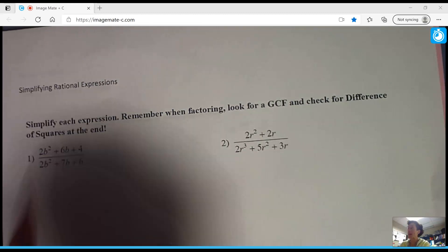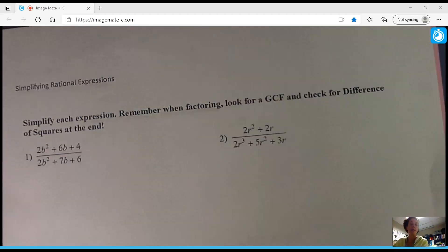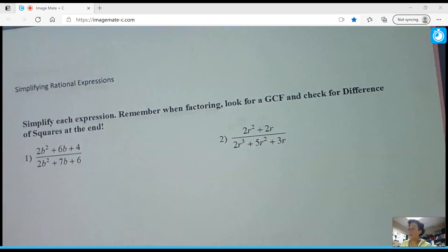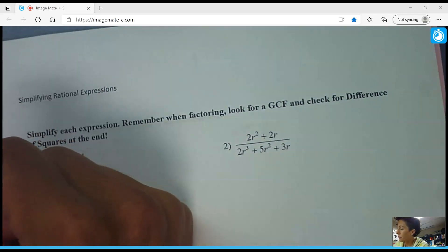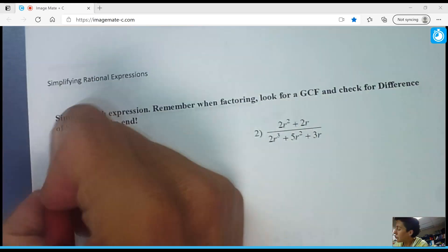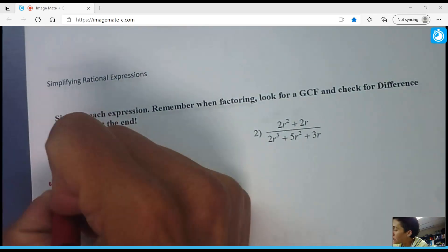In my first problem, when I look for a GCF, I'm going to take a 2 out of all these. This work right here is just for the numerator. So I'm going to go ahead and GCF that 2 out.